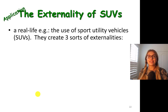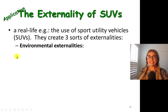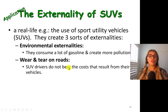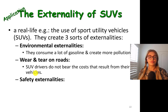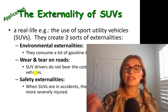Let's talk about a real-life example: the use of SUVs, or sports utility vehicles. SUV use creates three kinds of externalities. First, environmental externalities — they consume a lot of gasoline and create more pollution. Second, wear and tear on roads, and SUV drivers do not bear the full cost resulting from their vehicles, because the tax per gallon that finances highways is the same as for other vehicles. Third, safety externalities — when SUVs are in accidents, the other drivers are often more severely injured.